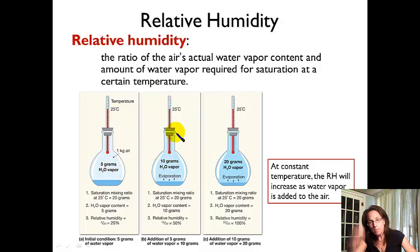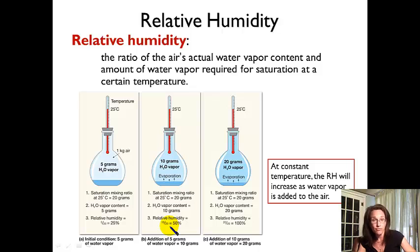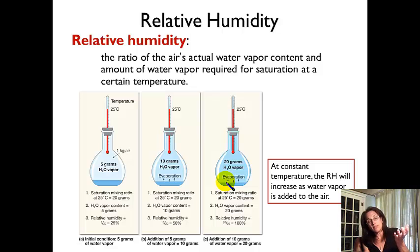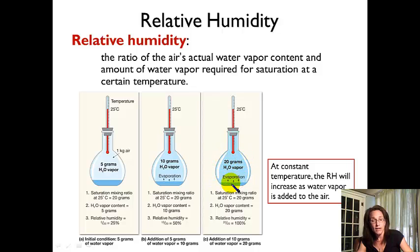If we add five more grams of water vapor, we're now at 50% relative humidity at 25 degrees Celsius — the air contains about half the water vapor it could contain. If we then add another 10 grams for a total of 20 grams, we're at saturation: evaporation rate equals condensation rate, water vapor content is no longer increasing, and we have 100% relative humidity.